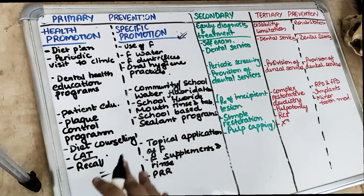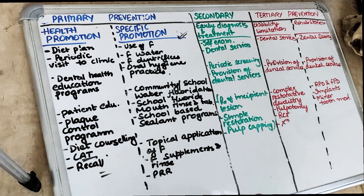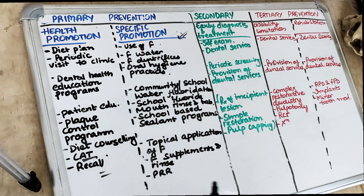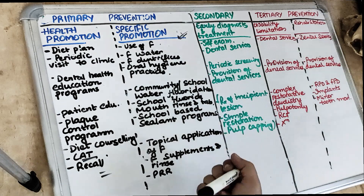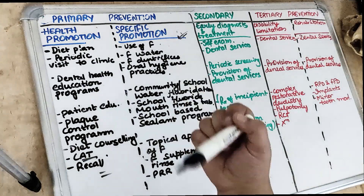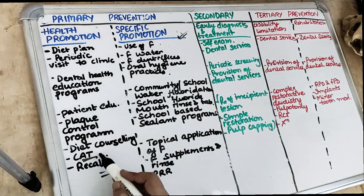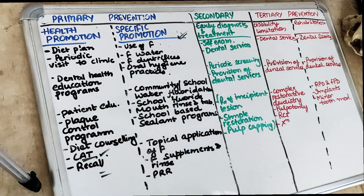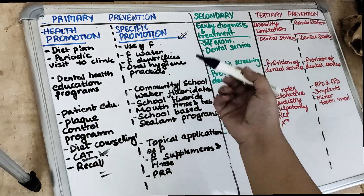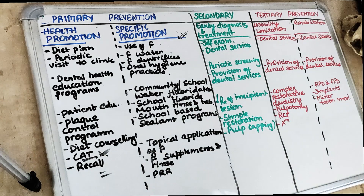Primary prevention is about preventing caries before it spreads. Specific promotion at the individual level includes fluoride in the water, fluoride in the toothpaste, and good brushing habits. So specific promotion involves appropriate use of fluoride, ingestion of fluoridated water, and use of fluoride dentifrices. Caries activity test we have already covered — you can find it in the playlist. Also oral hygiene practices like brushing habits.